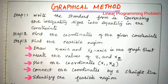Step 1 is to write the standard form — that is, convert the inequality constraints into equal form. Step 2 is to find the coordinates of the given constraints by assigning x1 equal to 0 or x2 equal to 0.